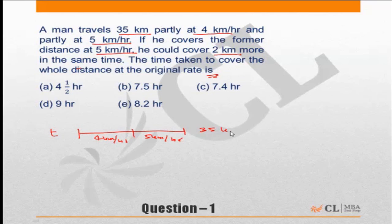35 kilometers. But in the same amount of time, if he is traveling at 5 kilometers per hour throughout, then instead of 35 kilometers he will be able to do 2 kilometers more, or he will be able to do 37 kilometers. In other words...